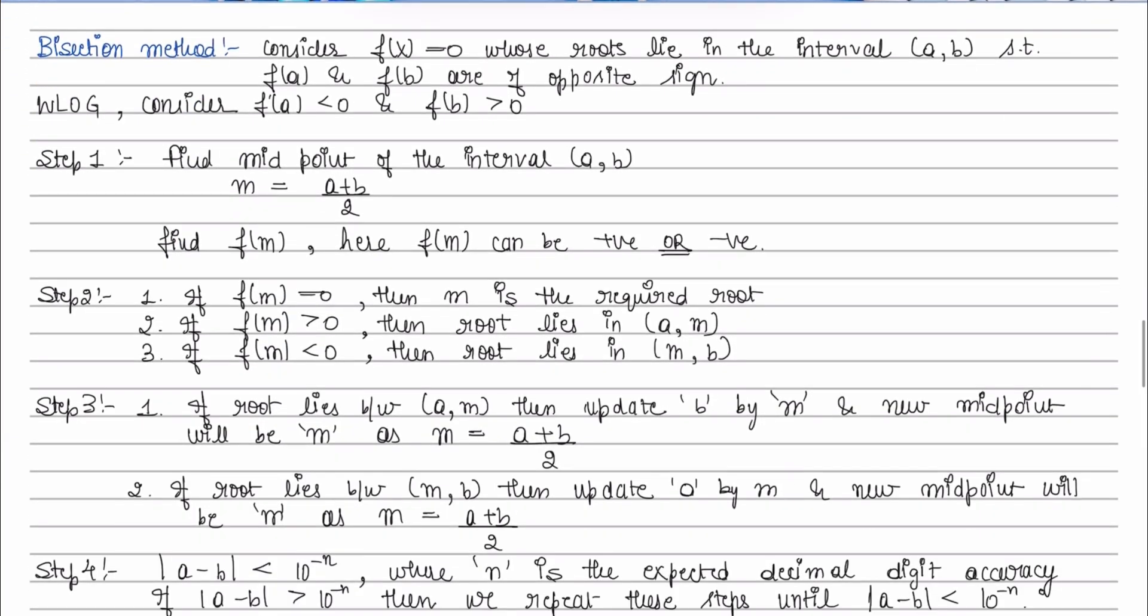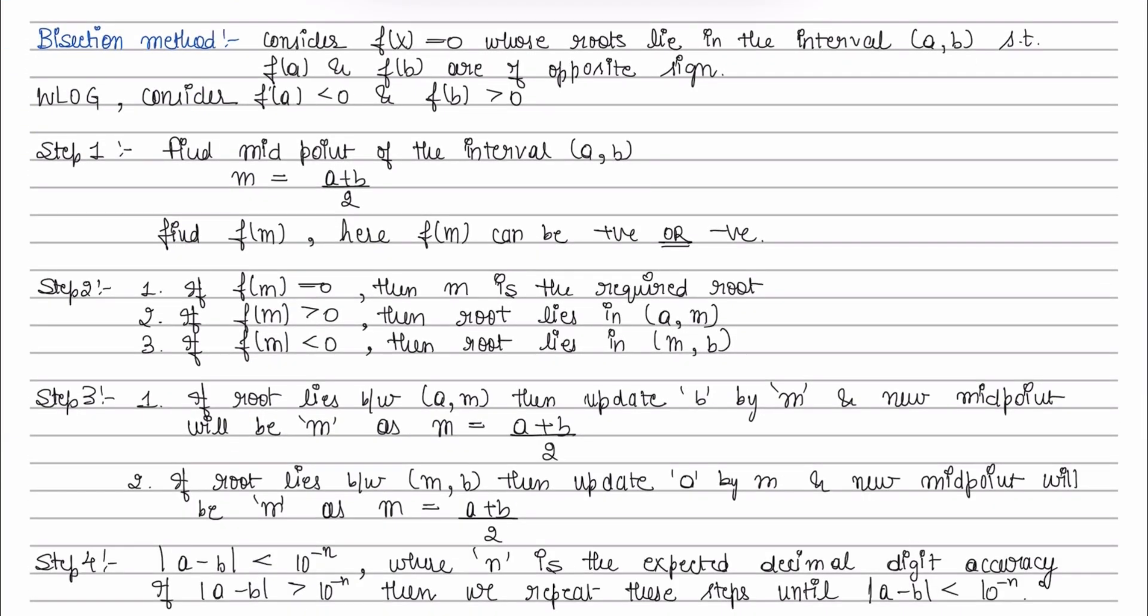Recalling the bisection method, we initially have a function, say f of x equals to 0, whose roots lie in the initial interval a and b, such that f of a and f of b are of opposite signs. So by the intermediate value property, there will definitely exist a root between a and b.